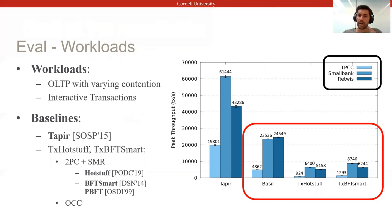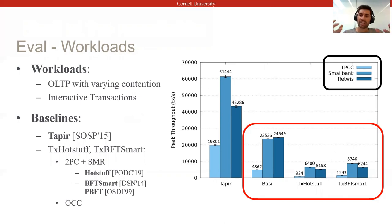Here, Basel significantly outperforms both baselines, mainly since it reduces latency by minimizing the coordination required during distributed commit, which allows transactions to often commit in a single round trip. Reducing latency, in turn, translates into increased throughput on contention-bottlenecked workloads.